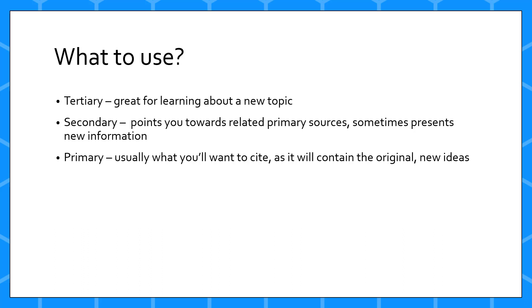When citing ideas and concepts you learn from these sources, you should always track the idea to its original source — usually the primary research article, but sometimes the secondary review article if it presents new information gained from its analysis of the primary literature.